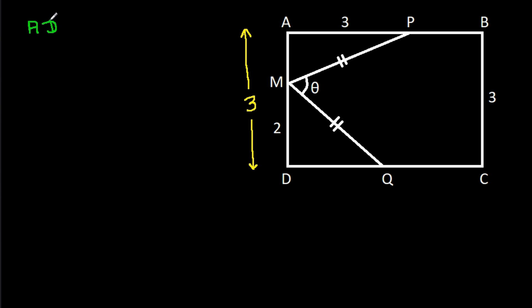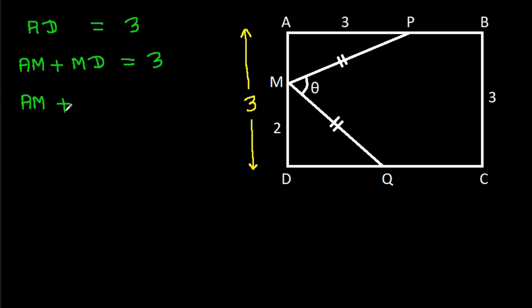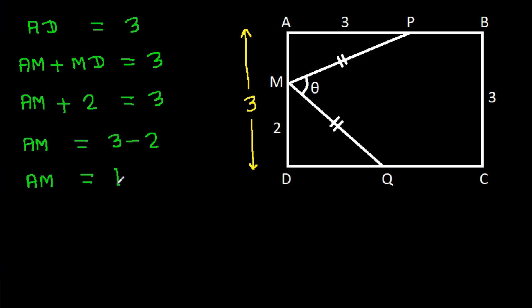We have AD is 3, and AD is AM plus MD, which equals 3. So AM plus MD equals 3, and MD is 2. Therefore AM will be 3 minus 2, so AM is 1.